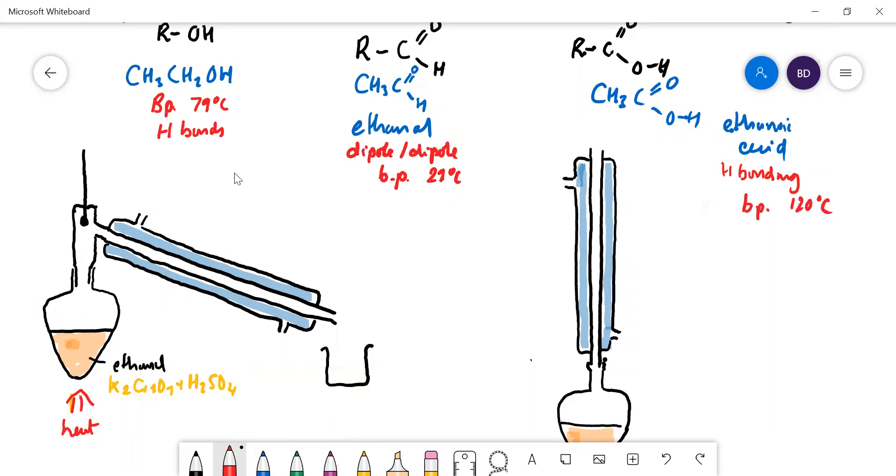If you want to get ethanal, you use this apparatus here and you distill off the product. You heat it up here. Your ethanol is going to be oxidized to ethanal, so your ethanal vapors are going to come up here. Because they are a lot more volatile than ethanol, boiling at 29, the ethanal vapor is then going to reach the top here. What we've got here colored in blue is a condenser.